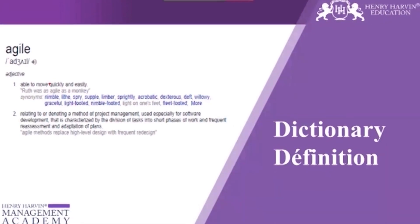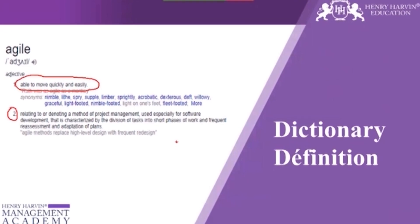The dictionary definition of agile is 'able to move quickly and easily.' But there is another definition more relevant to us: relating to or denoting a method of project management used especially for software development, categorized by the division of tasks into short phases of work and frequent reassessment and adaptation of the plan.